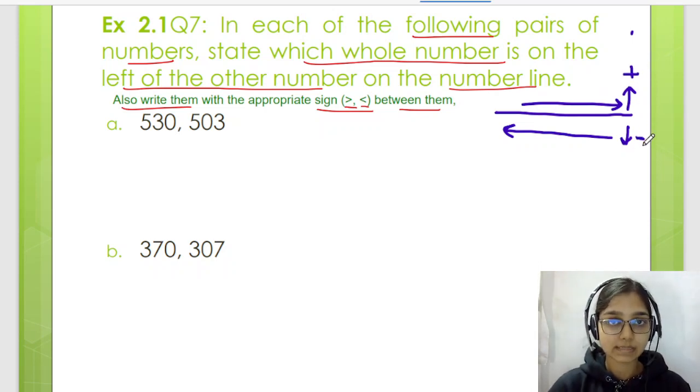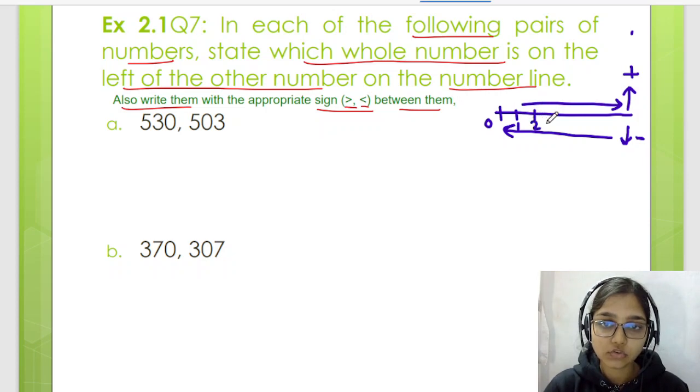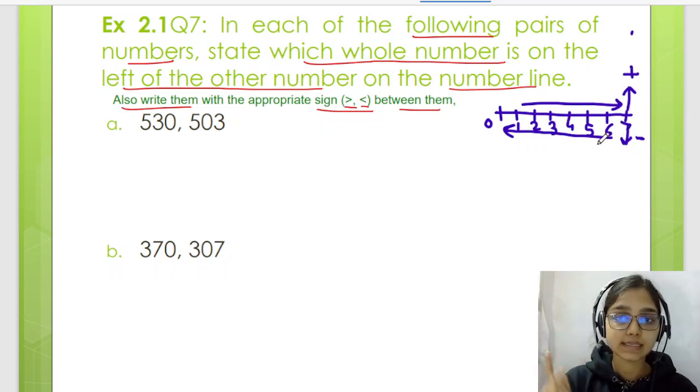As we move from right to left, number value is reduced. Example: 0, 1, 2, 3, 4, 5, 6, 7. So just as we can see, as we move left, the number value is reduced.